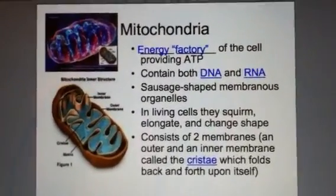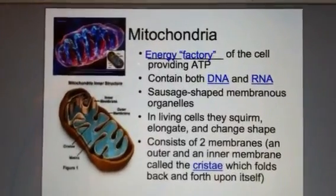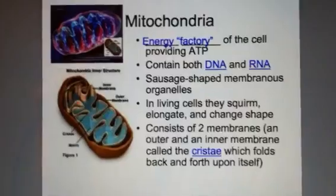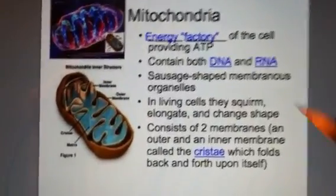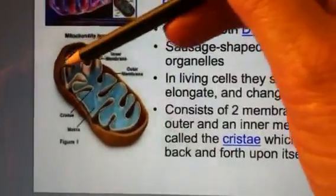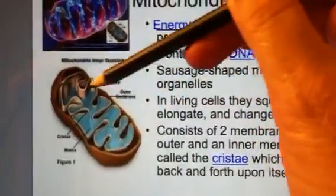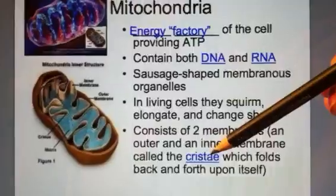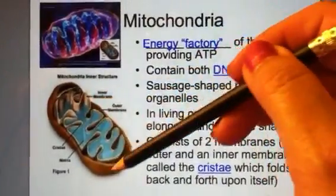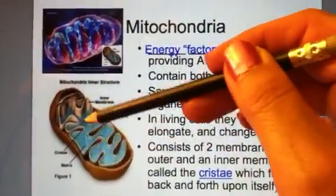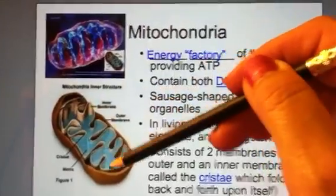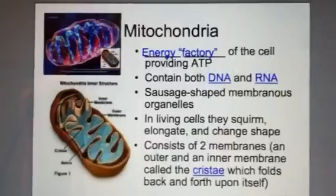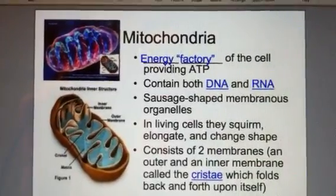Mitochondria are sausage-shaped, and they're alive — they squirm, move, and change shape; they're not just static organelles. They consist of two membranes: an outer membrane, and inside, a network of folded membranes known as cristae. The inner region is like a broth where the Krebs cycle takes place, which we'll cover in level two. That concludes slides 7, 8, and 9.